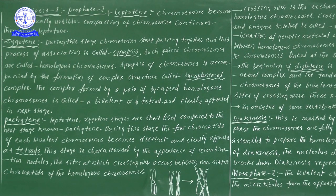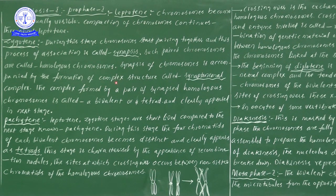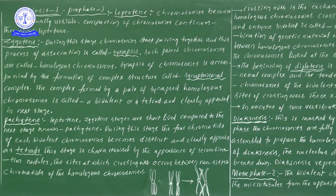In the sub-stage of Zygotene, we observe the pairing of chromosomes. That particular pairing — the process of association — is called Synapsis. This entire process is under the control of a structure called the Synaptonemal Complex. The pairing, or Synapsis, is under the control of the Synaptonemal Complex. With the help of the Synaptonemal Complex only, there is definitely a chance for the pairing of chromosomes. The complexes formed by a pair of homologous chromosomes are known as Bivalents or Tetrads.